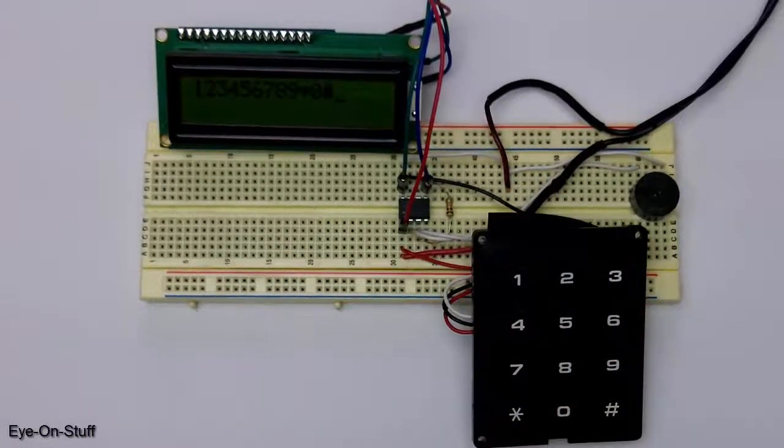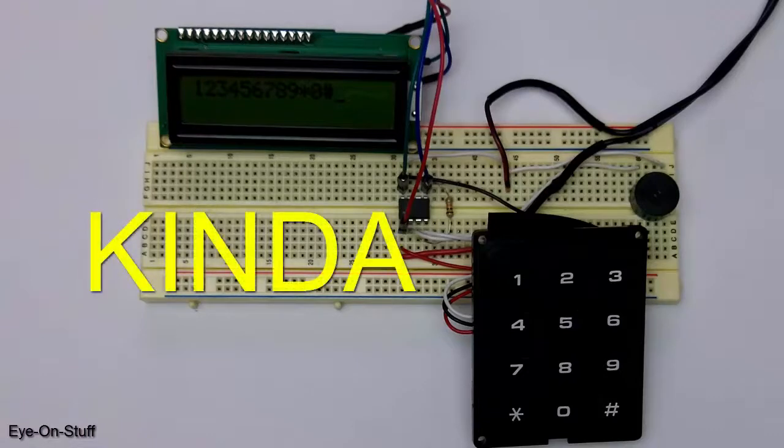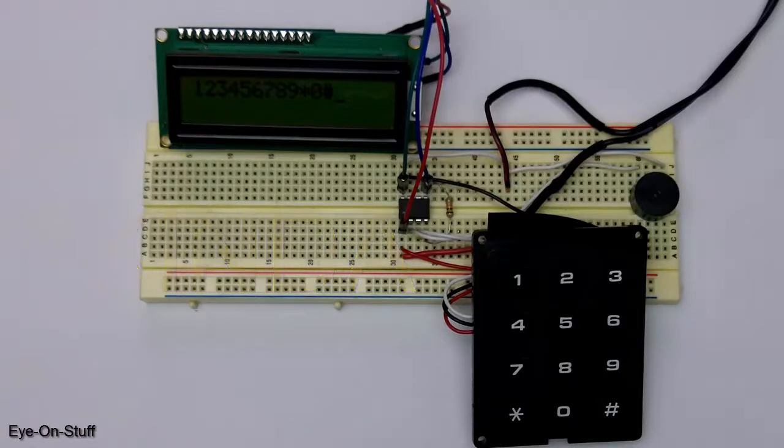If you look at the circuit it's kind of amazing because I have an LCD display and a 12 button keypad connected to an 8-pin microcontroller. And in many cases you'll find an LCD screen like this that requires 12 connections. And the keypad would require about 7 connections.